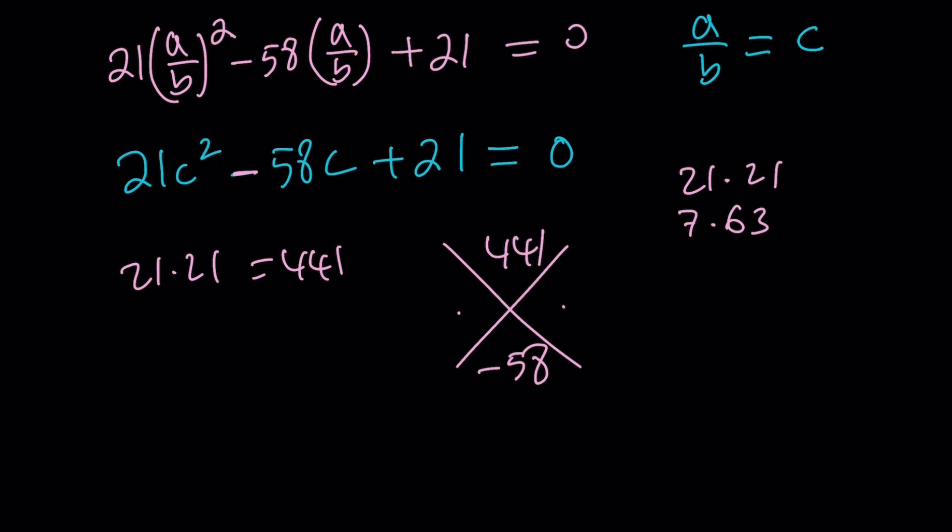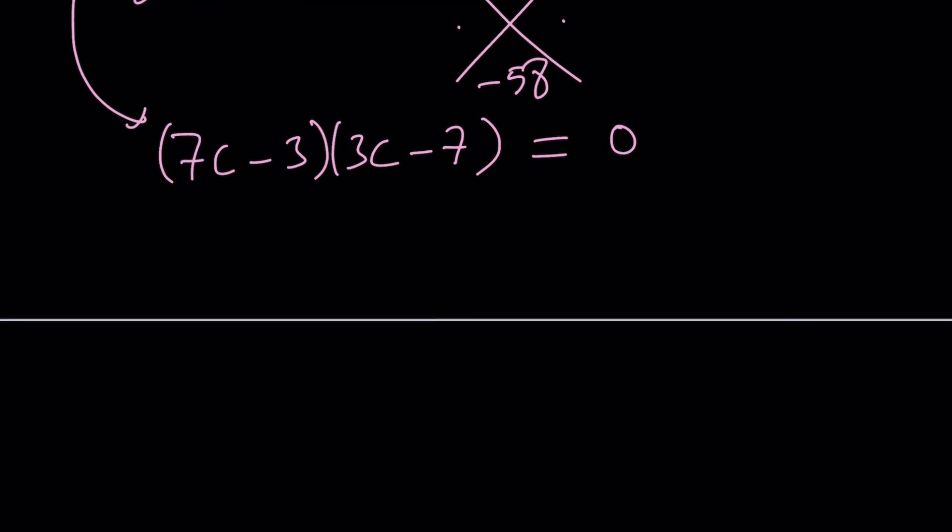You can use a calculator. Let me give you the way to factor this expression. This can be factored as (7c - 3)(3c - 7). By setting that equal to 0, we're finding two c values. So c can be 3/7 or c can be 7/3.